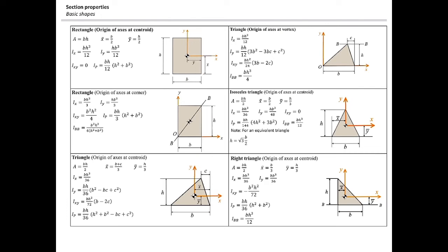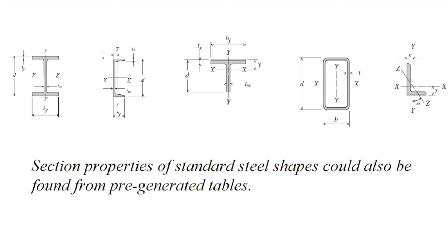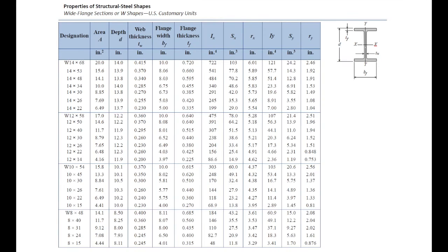Moment of inertia depends on both the axis and the shape. For rectangles, triangles, circles, and half-circles, you can read the values from the table found at the end of most Statics and Mechanics of Materials textbooks. On the course website, under references and the equations tab, you can find all of these section properties on the equation sheet.